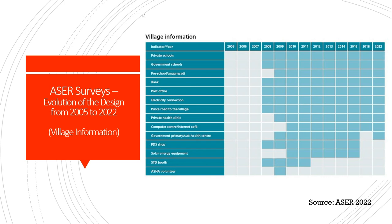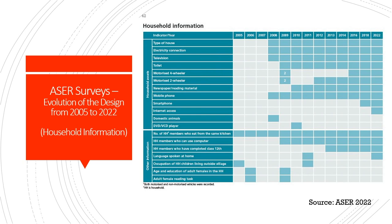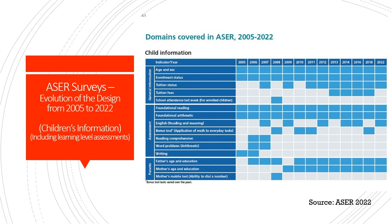The village information component gives us information about private schools, government schools, Anganwadis, existence of banks, post office, electricity connection, pakka roads to villages, private health clinics, computer centres, government primary centres, sub health centres, and ASHA volunteers. Household information provides data on types of houses, electricity connection, newspaper and reading material available, motorized vehicles, smartphones, internet access, and domestic animals. There is also information on household members who can use computers, and household members who have completed class 12. Child information domains covered include enrollment status, tuition status, school attendance in the last one week, assessments on foundational reading and arithmetic, reading comprehension, word problems, and writing. Parent information includes parents' age and education, mother's mobile test, and whether a mother's education influences children's education.